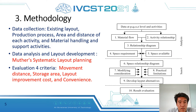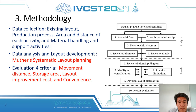The next topic is research methodology. We start with collecting five parts of data: existing layout, process flow, area, distance, and support activity. We then use the systematic layout planning process, starting by identifying P, Q, R, S, and T.